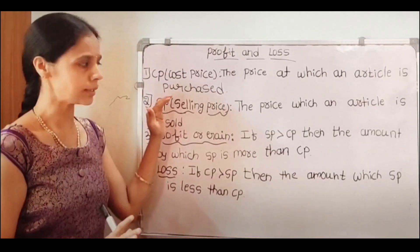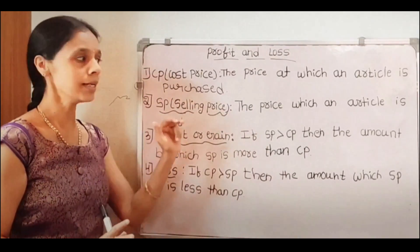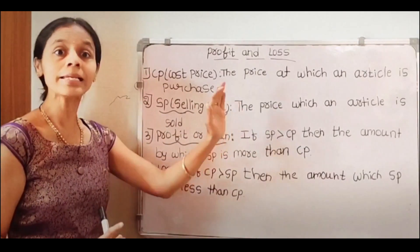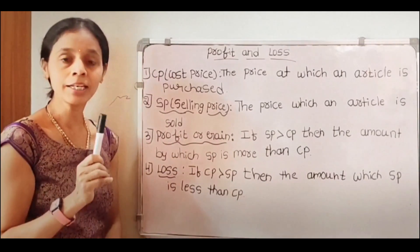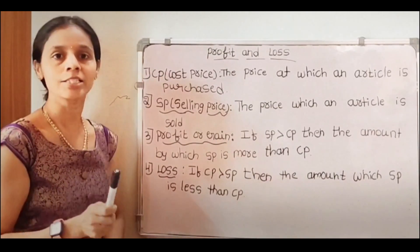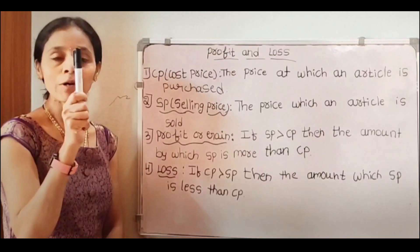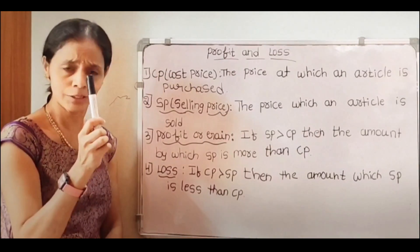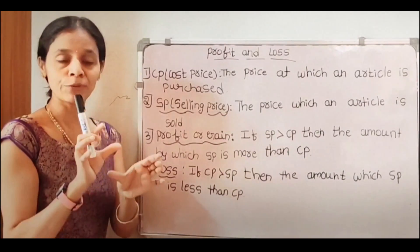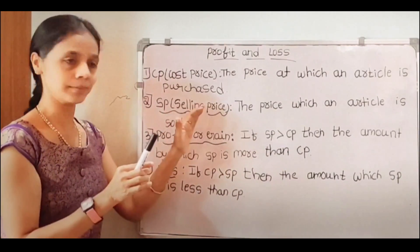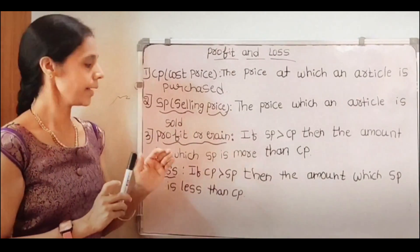Next, we consider SP. SP means selling price. Selling price means the price at which an article is sold. For example, the cost price of this marker is 10 rupees, but this marker is sold for 15 rupees. That 15 rupees we call the selling price.